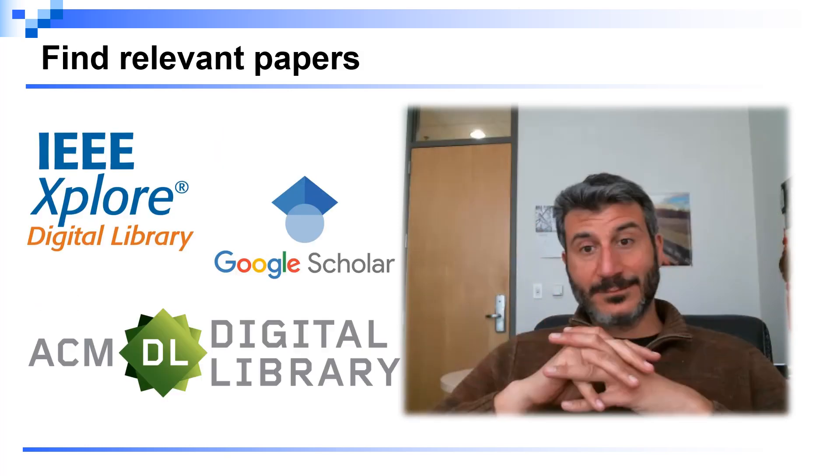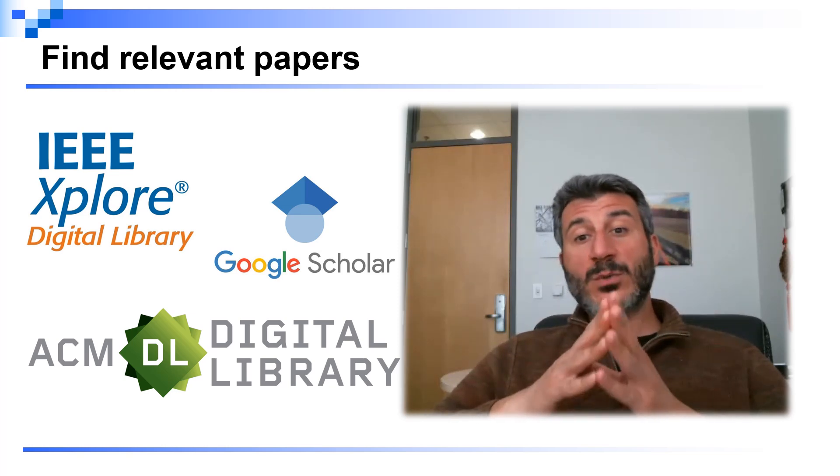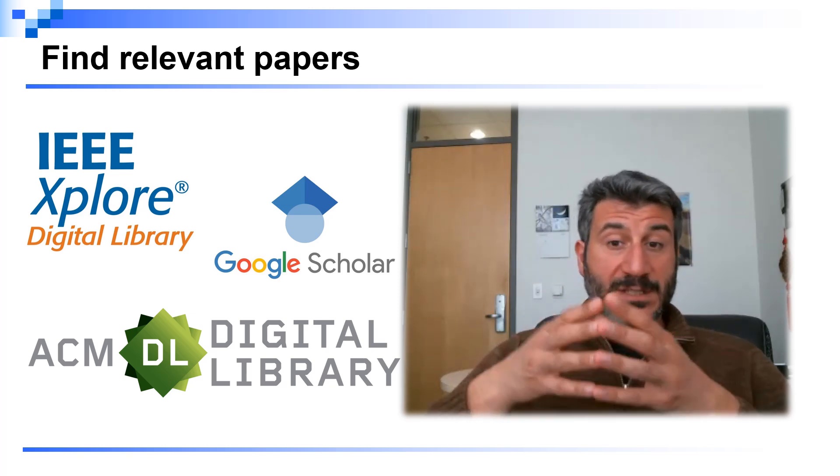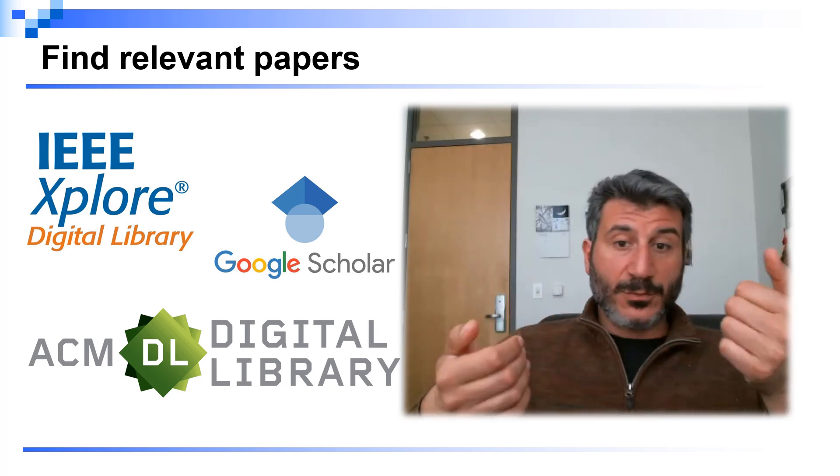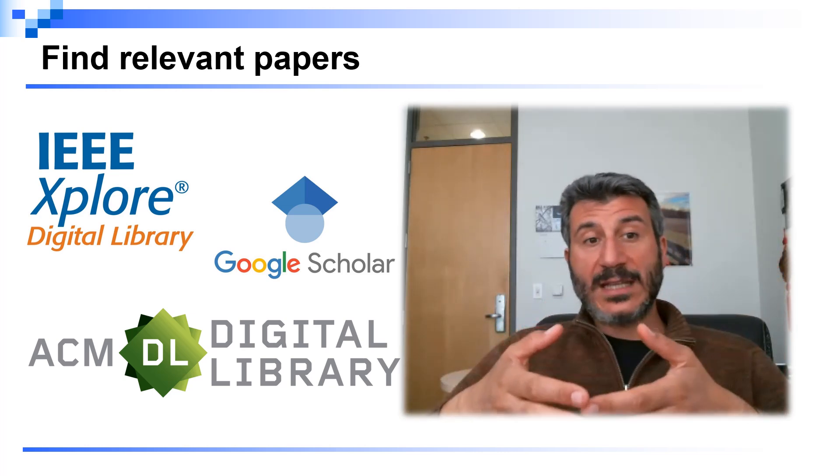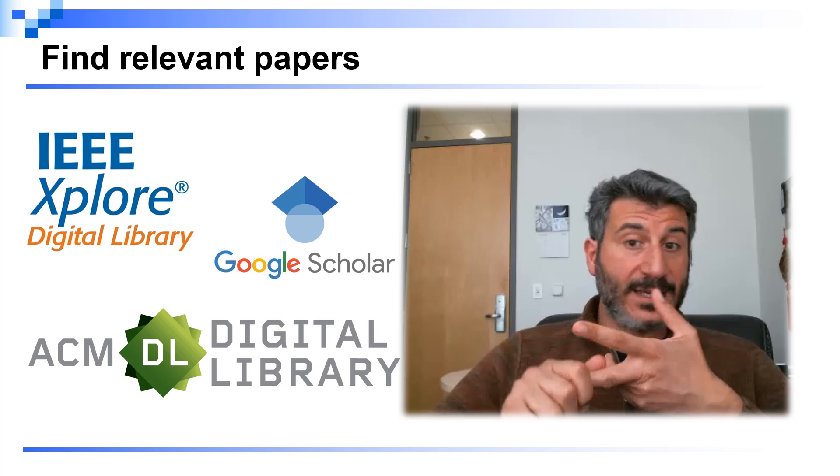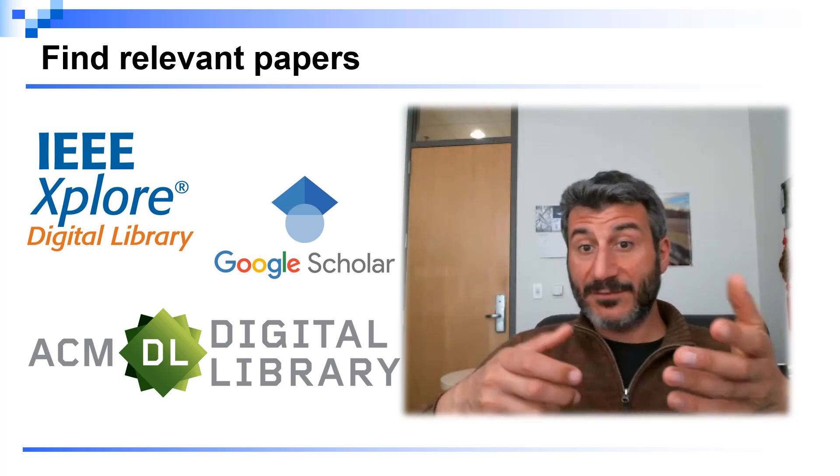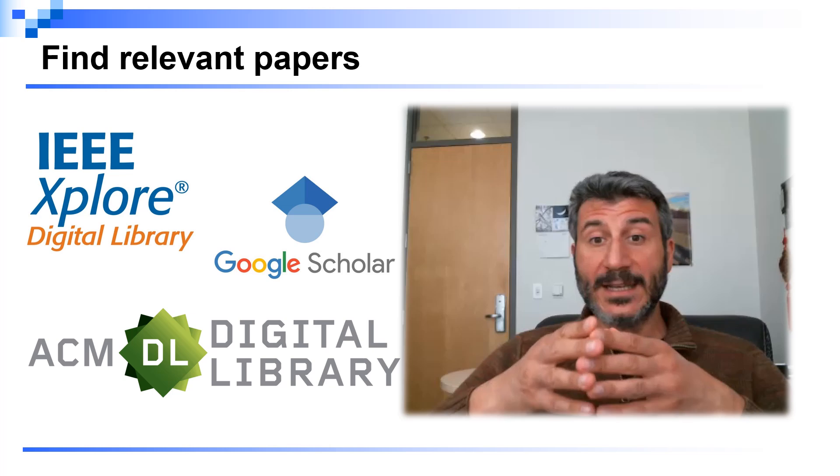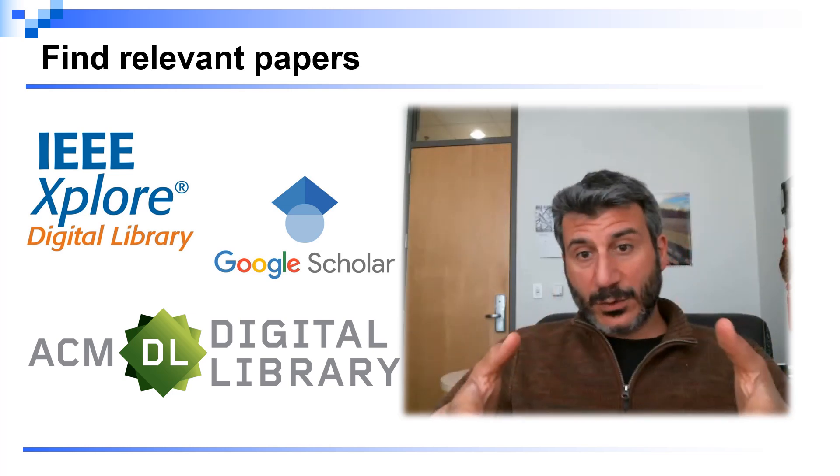So you do it inside the introduction. The next question is, where do I find the papers that I should describe in the related work section? Well, in my area, computer science and computer engineering generally, we use tools like IEEE Xplore and the ACM Digital Library. And in recent years, also Google Scholar has been a very valuable tool in order to find papers that are related to what we are proposing.